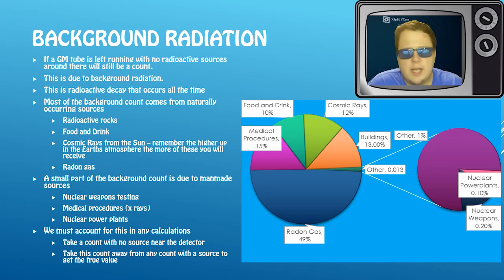A very small part of your background count is due to man-made sources - so you can see here that would be like 15-20%, something like that - and that's from things like nuclear weapons testing, about half a percent if that now these days. Medical procedures - X-rays or ionizing radiations - some of your background dose throughout the year will be from X-rays.